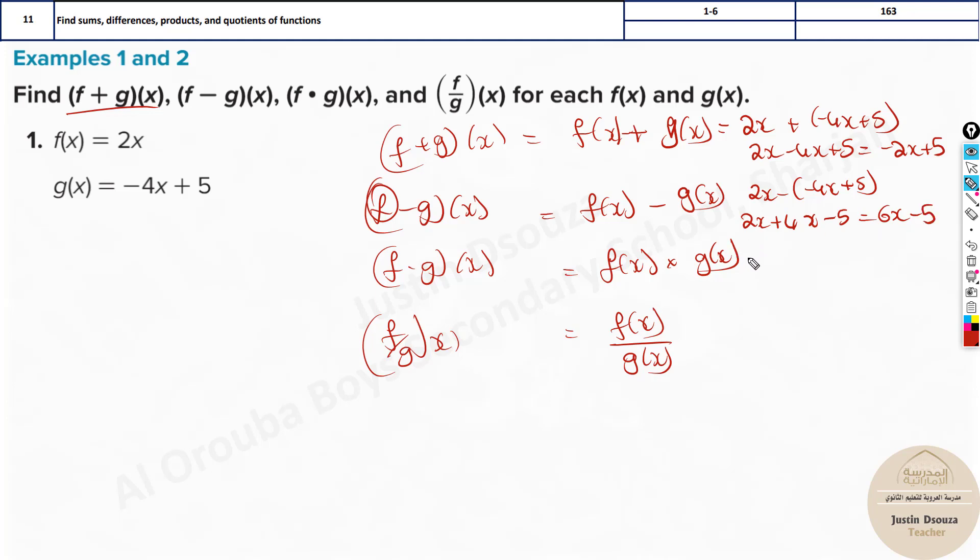Multiplication is by FOIL method. Over here just distribute your property. It will be 2x times minus 4x plus 5. Multiply this 2x inside. It will be minus 8x square plus 10x. And lastly we have division. That is 2x divided by minus 4x plus 5.